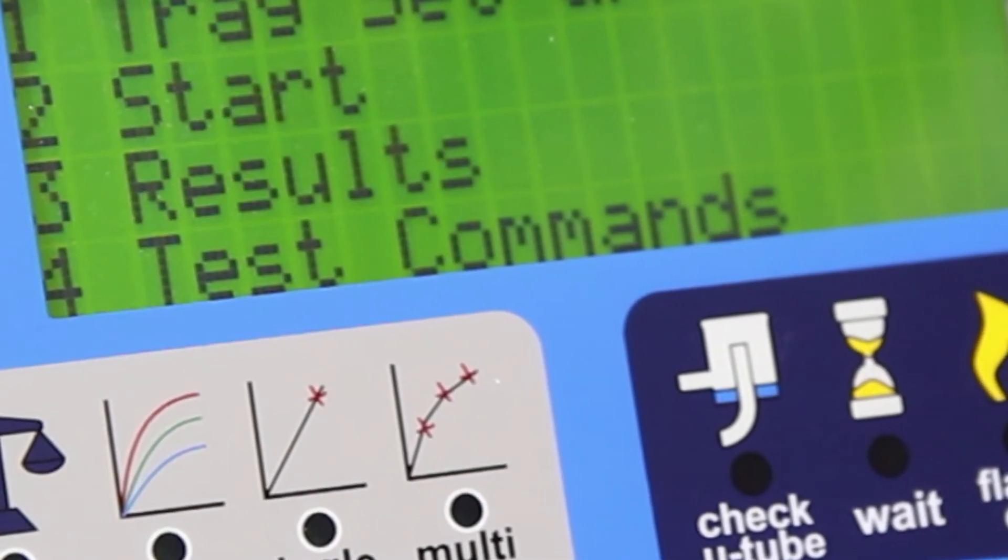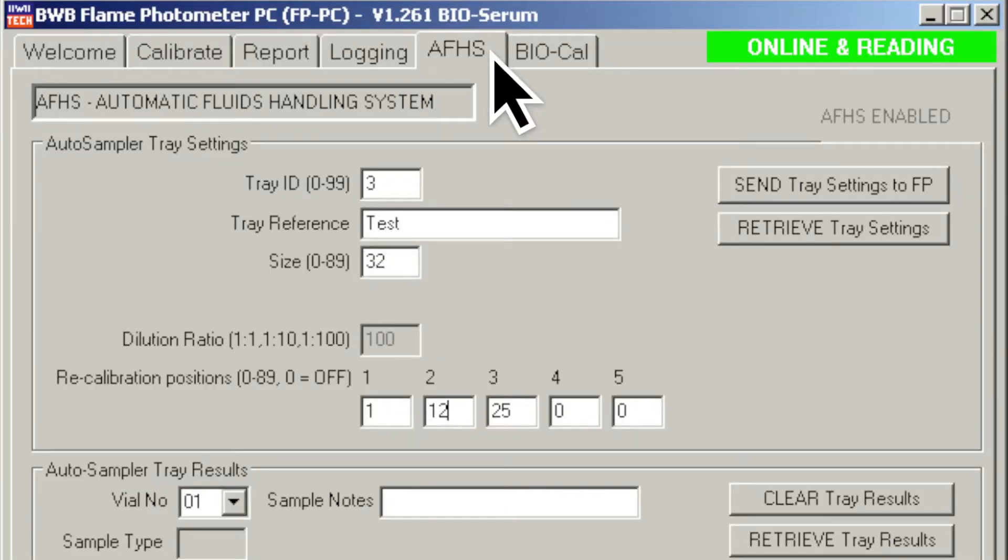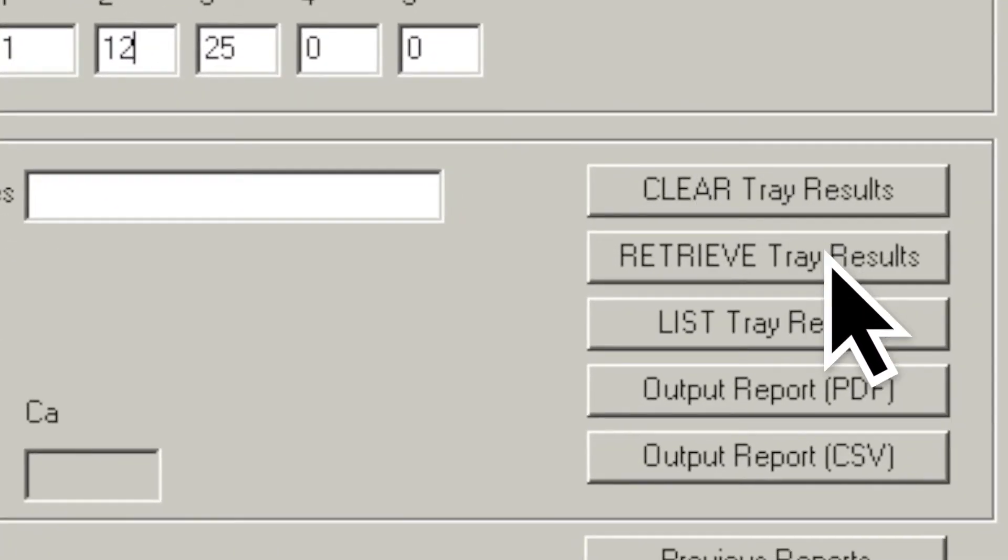When the run has finished, the results can be retrieved via Results, printed again, or uploaded to FPPC software via AFHS tab Retrieve.